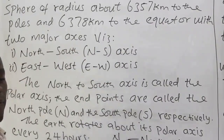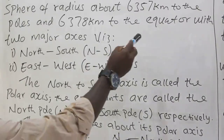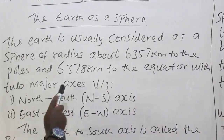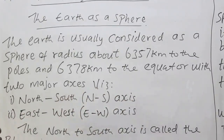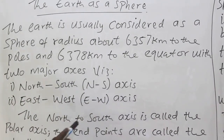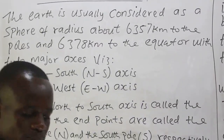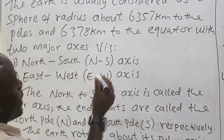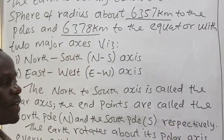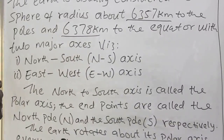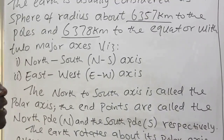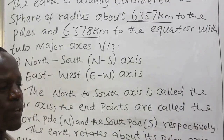The earth is usually considered as a sphere of radius about 6357 kilometers to the poles and 6378 kilometers to the equator, with two major axes: the north-south axis and the east-west axis. The radius of a sphere is equal at all points, but for the earth we discover that the radius to the poles and the radius to the equator are not exactly the same.